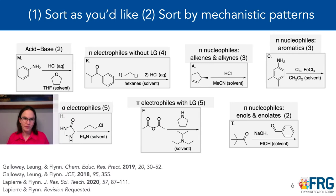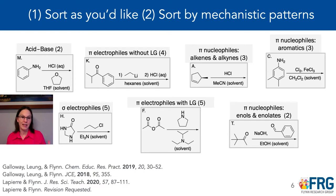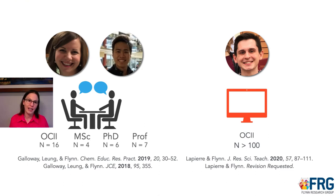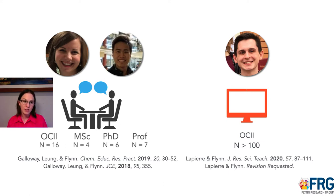Here's the approach we took. We started out developing reaction cards, and we asked students and professors to sort each reaction into categories. In the first stage, we asked them to sort however they wanted — they had 25 reaction cards, starting with 15 and then getting an additional 10. They could sort however they wanted, and we asked them to label and explain their categories. In a second phase, we asked them to sort by mechanistic patterns. Kelly and Minwa looked at the first stage through an interview setting with organic chemistry 2 participants as well as master's and PhD students and professors. Then Keith took on the project and moved it to an electronic platform with over 100 participants in different iterations of the data collection.